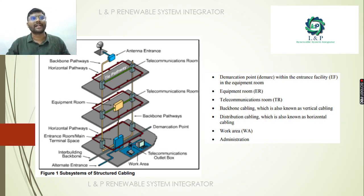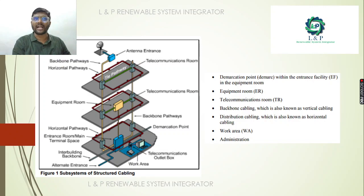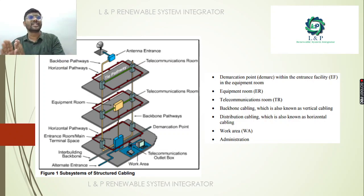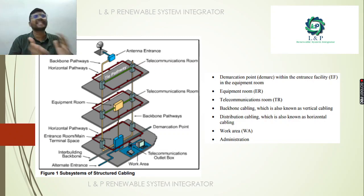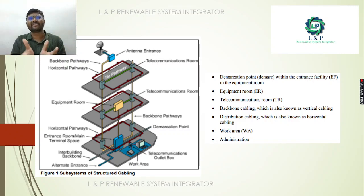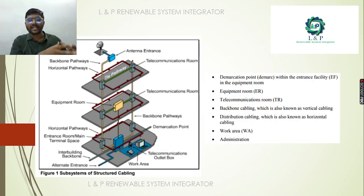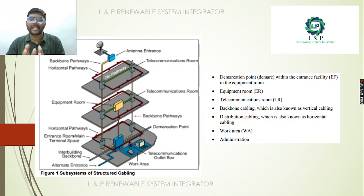The demarcation point is the entrance. Now, if you have EB power, you can fix the meter first. In the meter, we have a distribution box. That is why the structured cable has a demarcation point. There are many service providers — Airtel, Geo, and many others available. So if you have a service provider, you can receive the first point at the demarcation point.